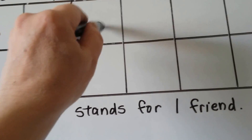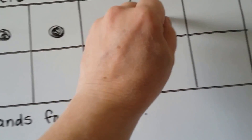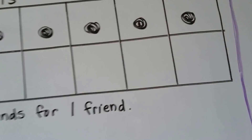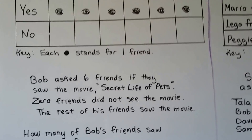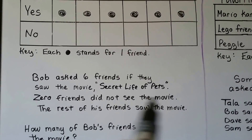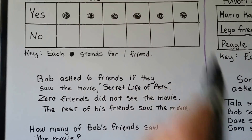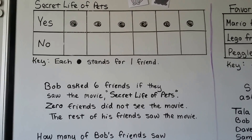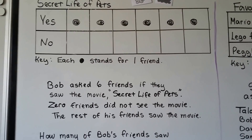He asked six friends, so there are going to be six people who say yes — one, two, three, four, five, six. Zero answered no, so we didn't fill any in for no. He asked six friends, so we have six answer boxes — one, two, three, four, five, six — just in case they all give the same answer. And in this case they did.